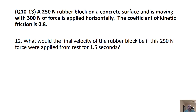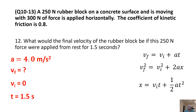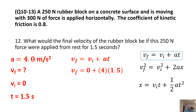What would the final velocity of the rubber block be if the 300 newton force were applied from rest for 1.5 seconds? We have acceleration of 4 m/s², initial velocity of zero, and time of 1.5 seconds. Using the 1D motion equation VF equals VI plus AT, we plug in our values and get a final velocity of 6 meters per second.